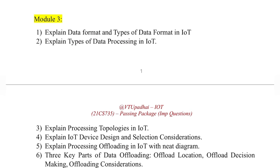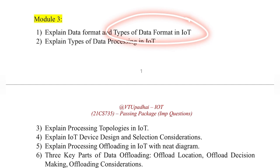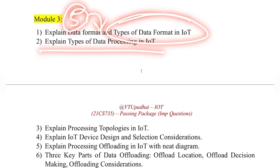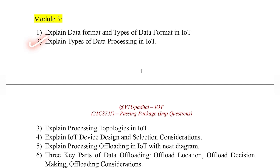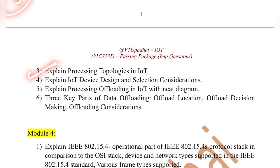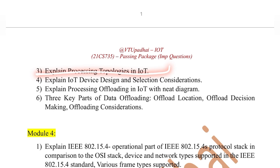Going on to the third module — again very simple topics with very limited content. Starting with what is data format, what are the types of data format — critical data, very time-critical data, and so on — just this can be asked for five marks. Then explain types of data processing, also a five-mark question. Then what are the processing topologies — a very important question that could be asked for 10 marks, as there are two types of processing topologies with diagrams.